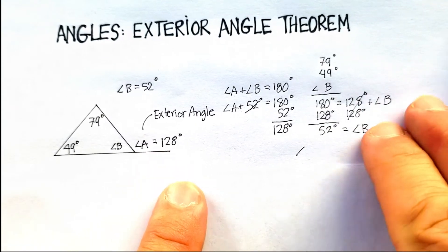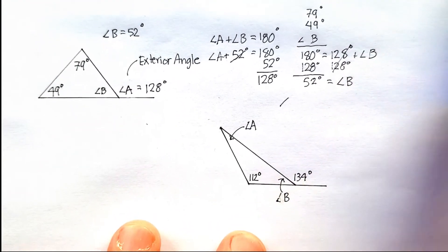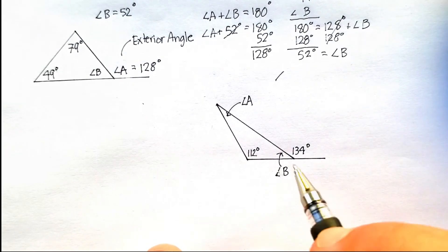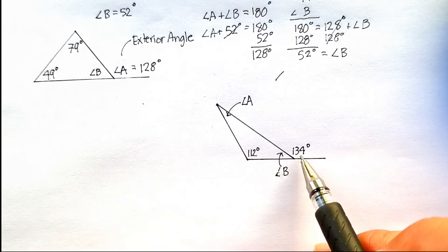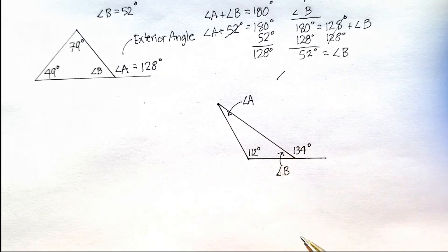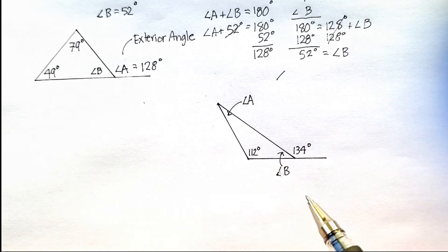Now let me just show you one more example of this, and then we'll be finished with it. So let's say, here's an example. I know that my exterior angle is 134. And I want to find angle A and angle B.